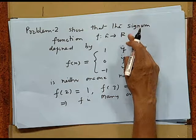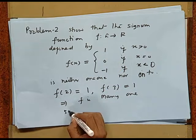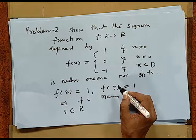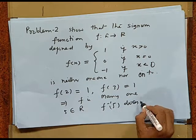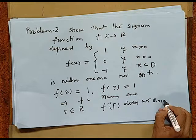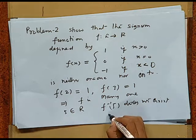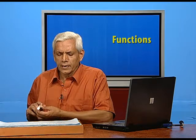Also, take any number in the codomain, that is R, other than 1, 0, and -1. Suppose we take 5. Five belongs to R from the codomain and there is no pre-image for it. It means there is no element in R whose f-image is 5. So f-inverse of 5 does not exist. Hence, it is many-one and into. In other words, it is neither one-one nor onto, or in other words, it is neither injection nor surjection.